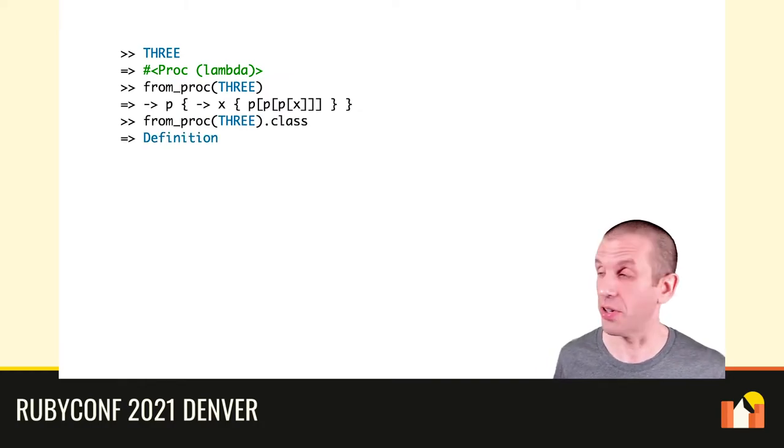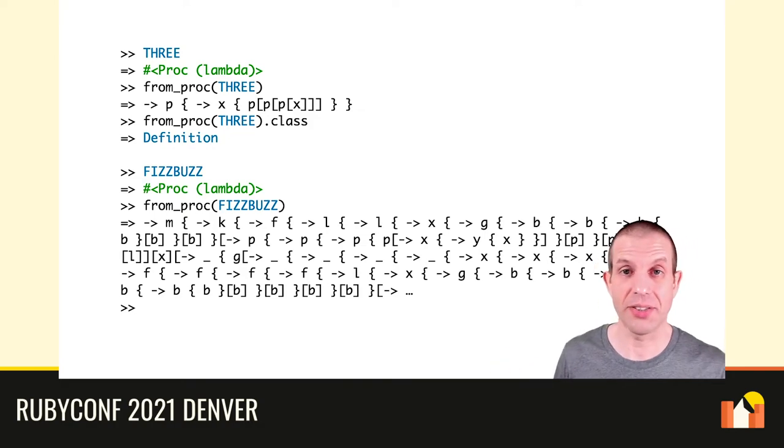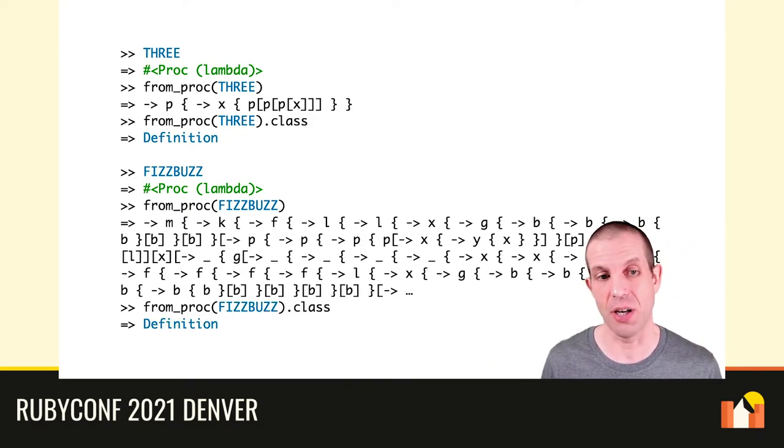Don't worry about trying to read any of the code I'm showing here — it's all on GitHub if you're interested, so it's safe to just let it wash over you right now. But the overall idea is that we can write a from_proc method which converts a proc into an expression. We do this trick of making a new variable object with the same name as the proc's parameter and calling the proc with it as an argument, so all occurrences of the proc's parameter inside its body become that variable object. Then we recursively convert the result in case the body is another proc, and finally build a new definition object and return it. And we need to replace the square brackets method on the variable, call, and proc classes so it builds a new call object instead. Now we can convert the proc encoding of 3 to our own representation — and likewise for FizzBuzz.